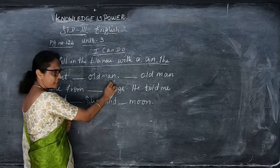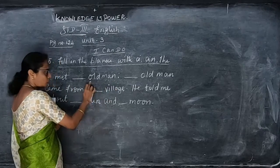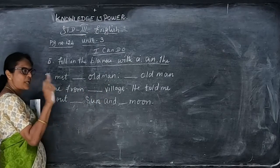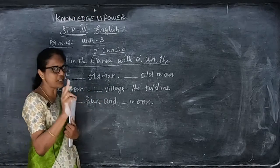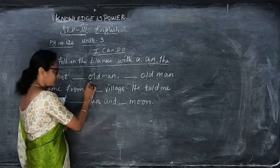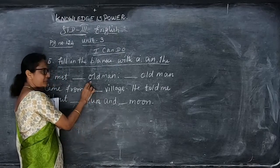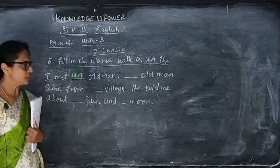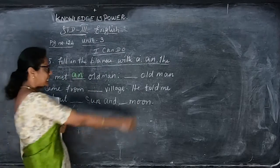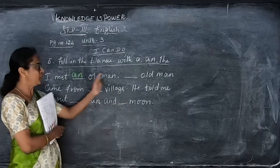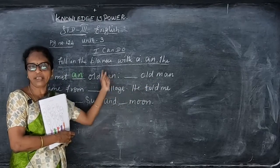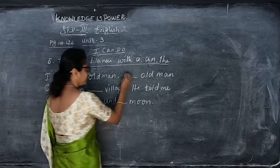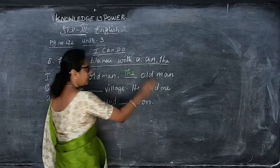Since 'old' starts with O — a vowel — we have to use 'an'. So it is 'I met an old man.' Then 'dash old man' again — we are talking about the same old man, so we use 'the'. The old man came from the village — a particular place, so 'the'. So: 'The old man came from the village.'